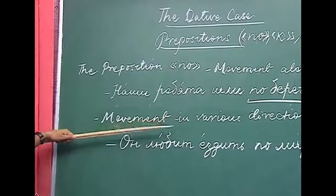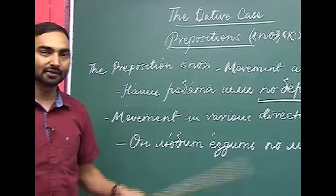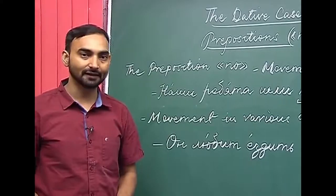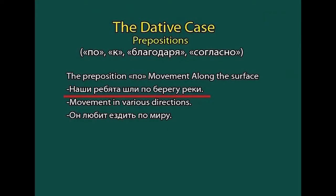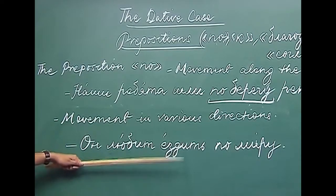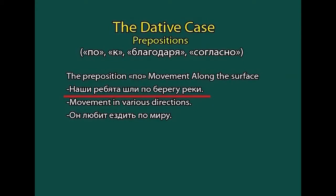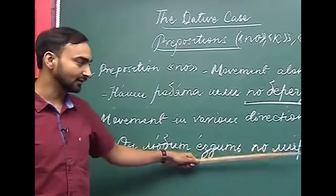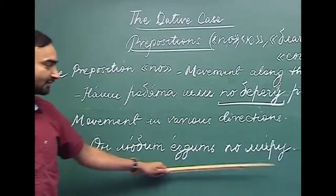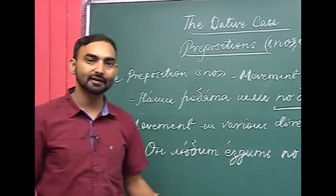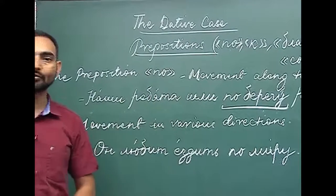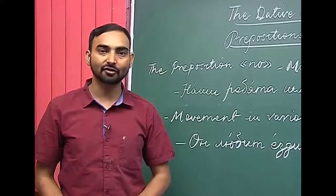The next meaning of po is movement in various directions — when direction is not fixed and you are going here and there. For example: on lyubit yezdit po miru — he loves to travel around the world. Mir becomes miru in the dative case after po. So when movement has no fixed direction, we use the preposition po with the noun in the dative case.